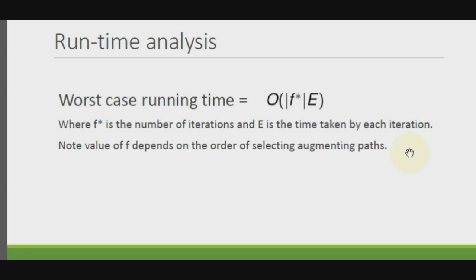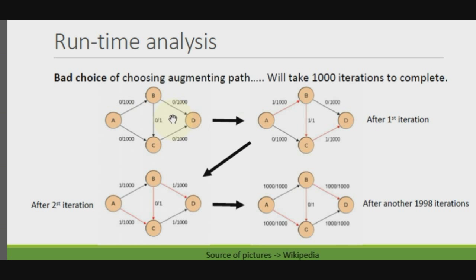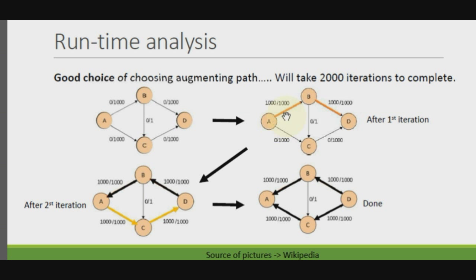The runtime is the number of iterations multiplied by the time per iteration. The number of iterations depends on the choice of augmenting path. A bad example: taking path A-B-C-D gives residual capacity 1, so only 1 unit per iteration. Alternating with path A-C-B-D — where C to B is a backward edge — also gives residual capacity 1, taking 2,000 iterations to complete. A good choice pushes 1,000 units per iteration and completes in just 2 iterations.